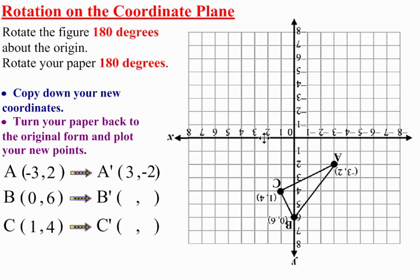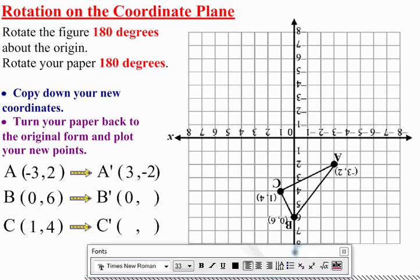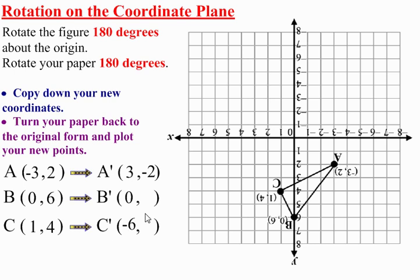B prime doesn't go right or left, so that will stay 0. And then it goes down 6. So any time that you go down 6, it is a negative 6.